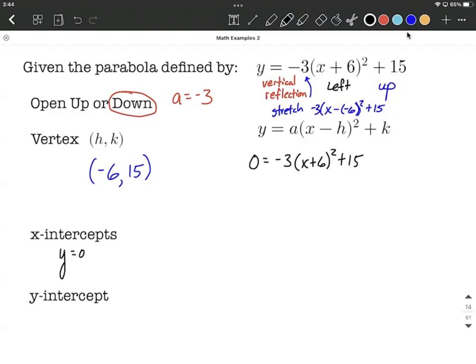Now to solve this, what I want to do is I want to isolate the parentheses that are raised to the second power. We can make this into a power equation. So to do that, I need to get rid of both the negative 3 and the 15. I'm going to move the 15 to the other side first by subtracting 15 from both sides.